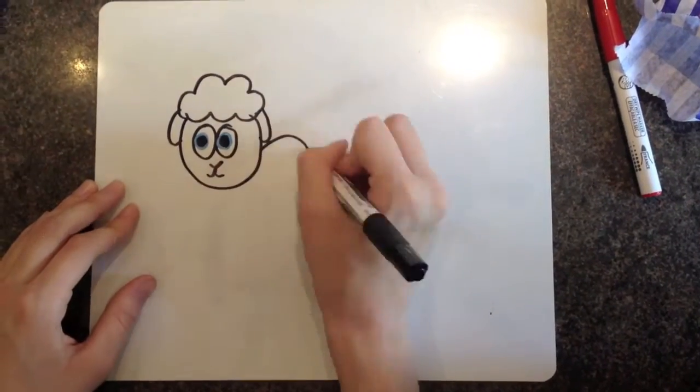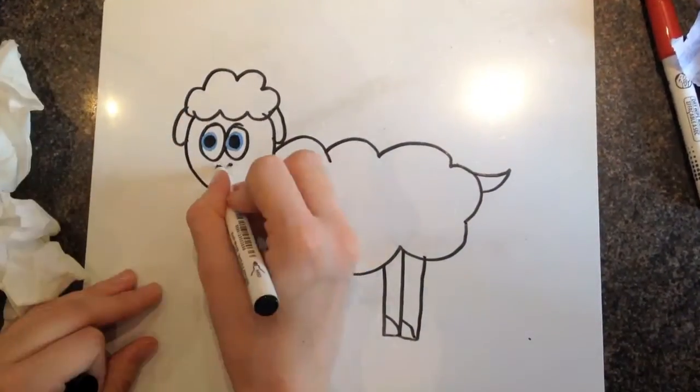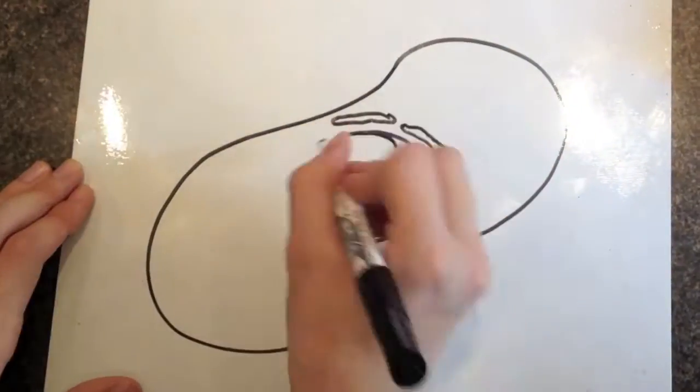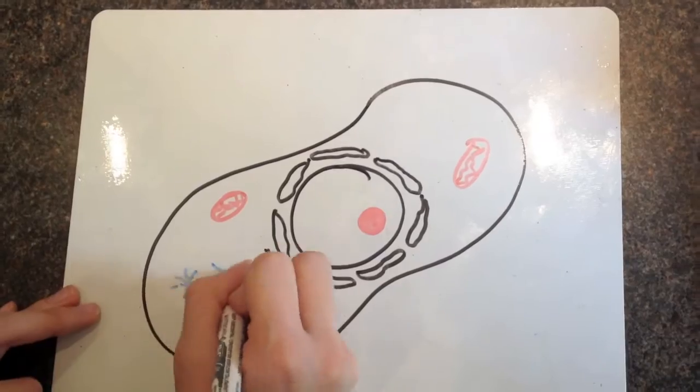Every living organism is made up of cells, cells that are the building blocks of life. If we take a closer look inside the cell, we can see it contains all sorts of different structures called organelles.